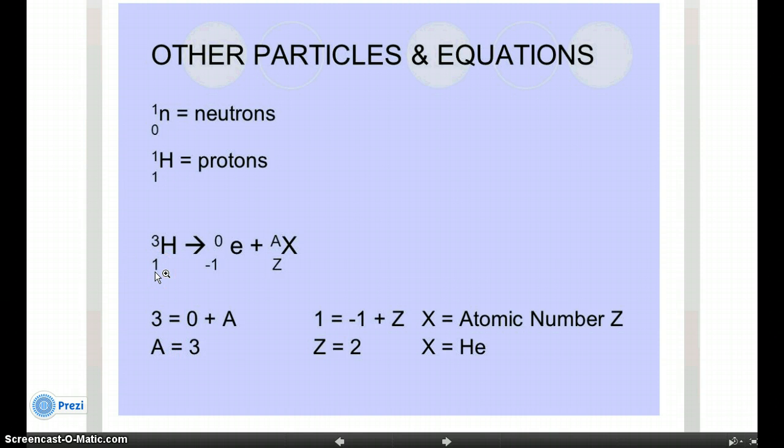We do the same thing with the charge, this bottom number, the atomic number. So the atomic number here is 1 equals negative 1 plus Z. This is a little harder. When you write it out, it helps. 1 equals negative 1 plus Z. In order to solve for Z, you actually have to add 1 to both sides to get rid of the negative 1. So Z equals 2.